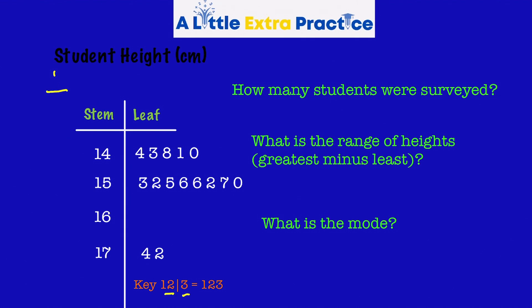Come back. We're looking at the hundreds and the tens here, and then the leaf are the 1s. For example, we have 144, 143, 148, 141, 140, and so on. Let's look at the first question. How many students were surveyed? Well, surveyed means asked. So let's take a look.